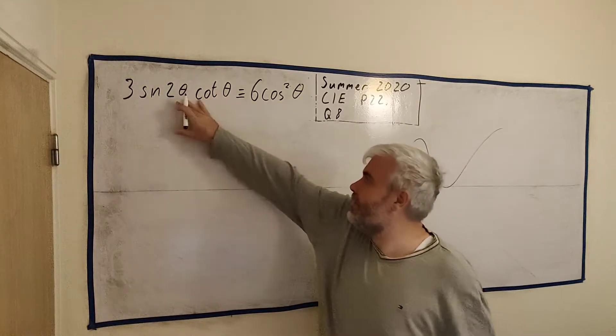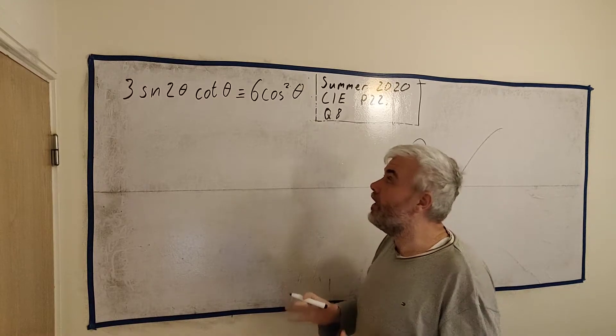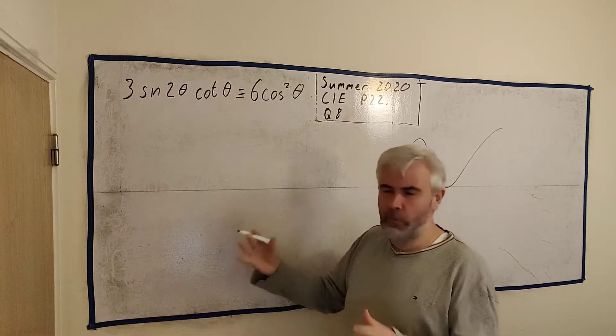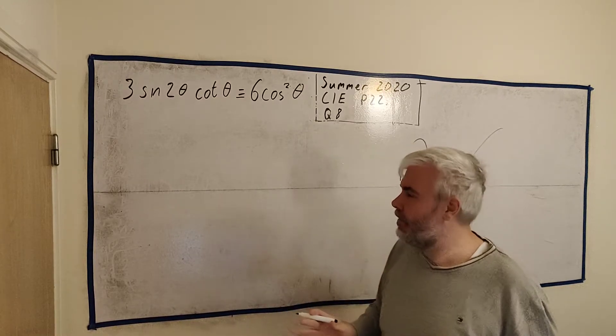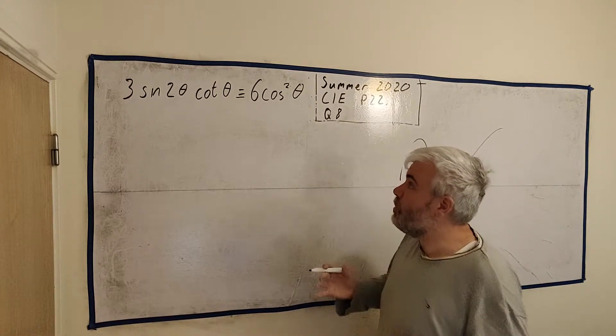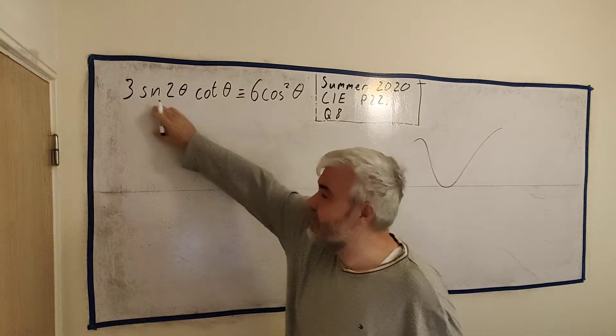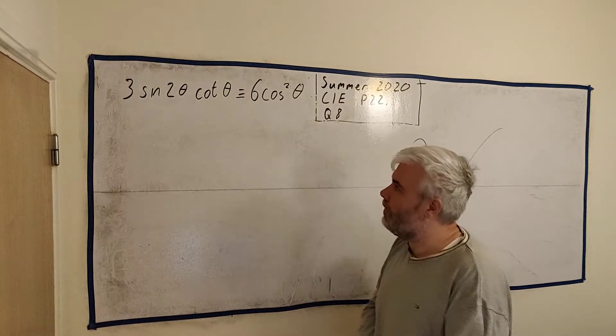Now how do we show that this is equal to this? What we need to do is play with one side and make it look like the other. Sometimes we play with both sides to make them look identical. But in this case this will work out just playing with one side. And usually we take the more complicated side. And I think the left side would be the more complicated.